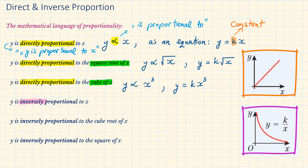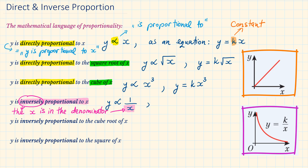Y is inversely proportional to X. We write this as Y, then the symbol of proportionality, and then the reciprocal of X — the inverse of X. Whenever we have inversely proportional, we have to make sure that the X goes in the denominator. To write this as an equation, we just swap the symbol of proportionality with equal and K, so we have Y equals K over X.